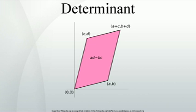There are various ways to define the determinant of a square matrix A, that is one with the same number of rows and columns. Perhaps the most natural way is expressed in terms of the columns of the matrix. If we write an n×n matrix in terms of its column vectors, where v are vectors of size n, then the determinant of A is defined so that the determinant is a linear function of each column, that interchanging adjacent columns reverses the sign of the determinant, and that the determinant of the identity matrix is 1. These properties mean that the determinant is an alternating multilinear function of the columns that maps the identity matrix to the underlying unit scalar.